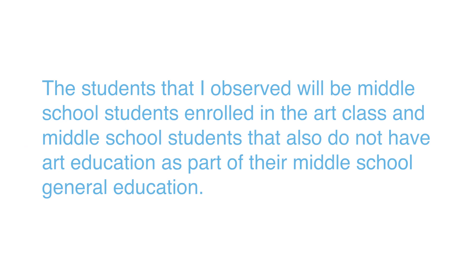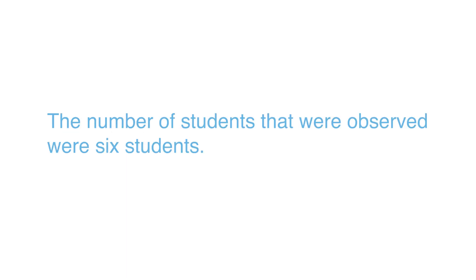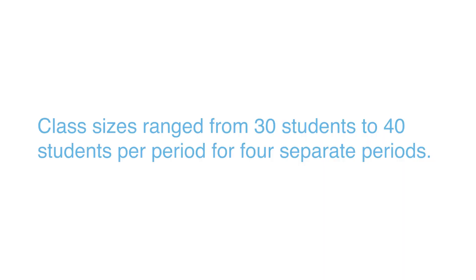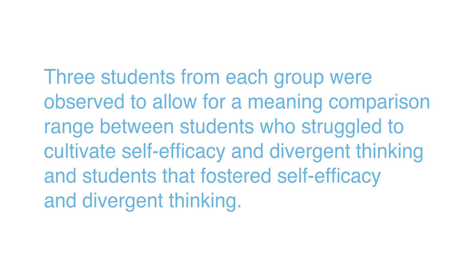The students I observed are middle school students enrolled in the art class and middle school students that do not have art education as part of their general education. Students without art education were enrolled in other electives. Six students were observed, ranging in age from 11 to 14 years old, with class sizes ranging from 30 to 40 students per period across four separate periods. Three students enrolled in art and three enrolled in other electives were observed to allow for a meaningful comparison between students who struggled and those who fostered self-efficacy and divergent thinking.